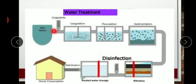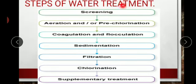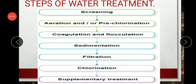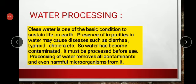These are all the steps of water treatment. As we know, around 71% of water is present in the world, but that water is not drinkable because it is saltish. With the help of water treatment, we make water drinkable — we recycle dirty water which contains harmful impurities. The steps are: screening, aeration and pre-chlorination, coagulation and flocculation, sedimentation, filtration, chlorination, and supplementary treatment.